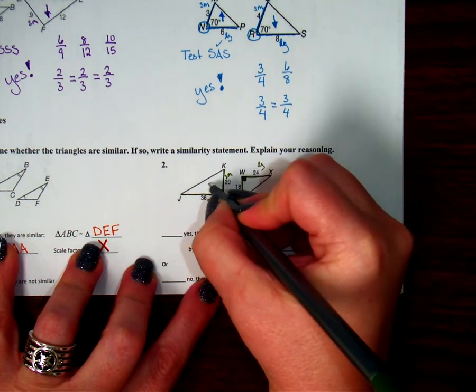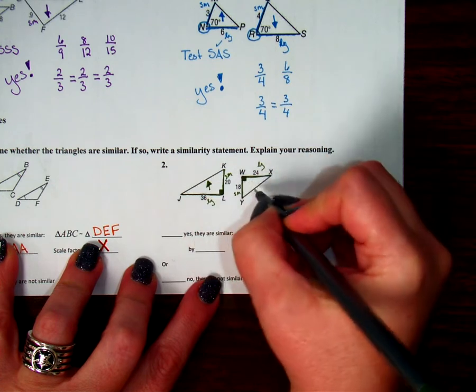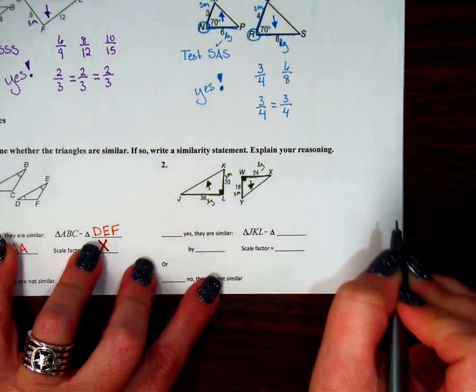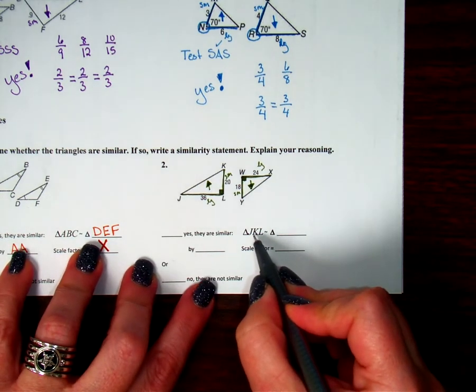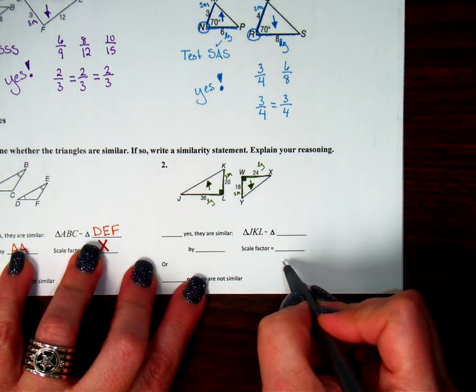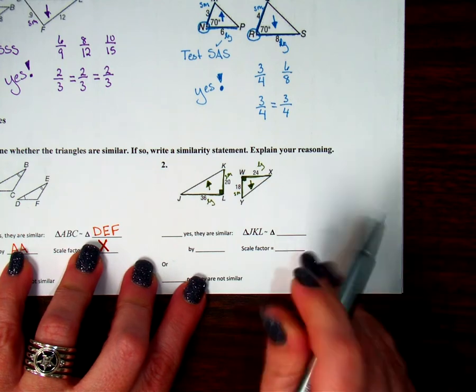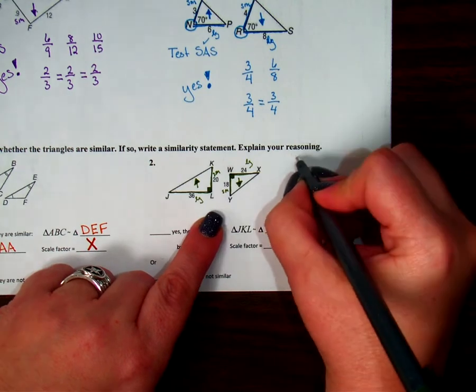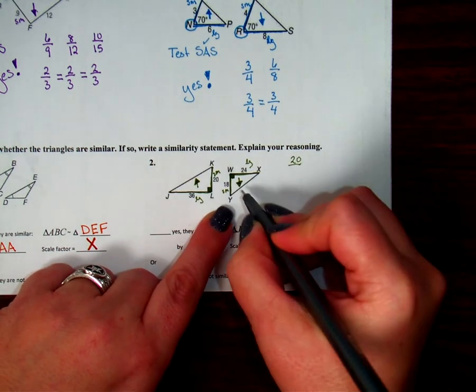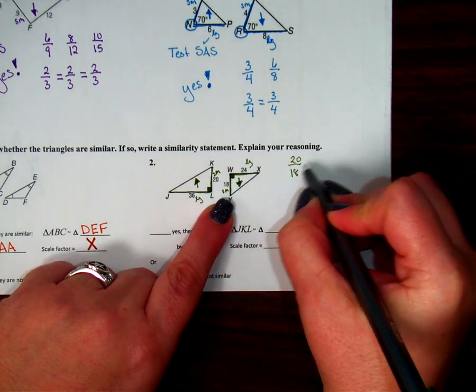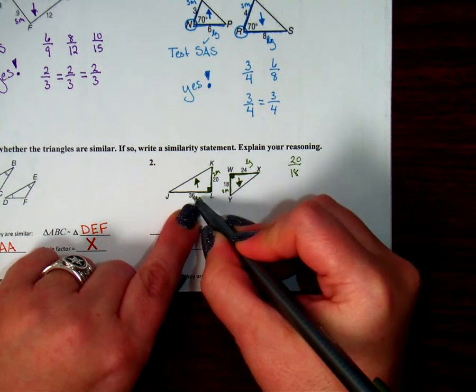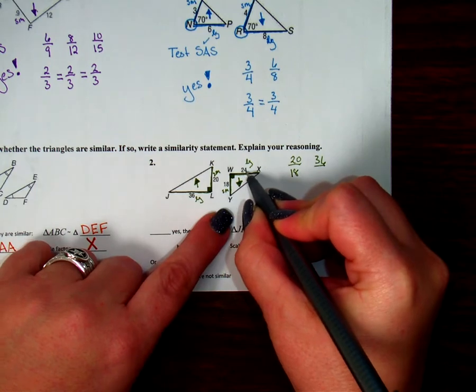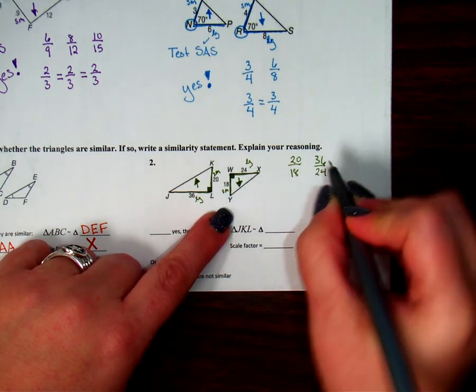And then I'm going to do arrow so I stay consistent. That's always going to be my numerator. That's always going to be my denominator. And it's good that I'm going to do that because JKL comes first. So when I do my scale factor, it'll make sense that it matches with my similarity statement. So compare small to small. My up small is 20, my down small is 18. And then I'm going to compare larges to larges. My up large is 36, and my down large is 24.